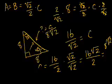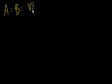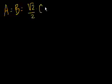I want to continue with the 45-45-90 triangles. In the last presentation we learned that either side of a 45-45-90 triangle that isn't the hypotenuse is equal to the square root of 2 over 2 times the hypotenuse.